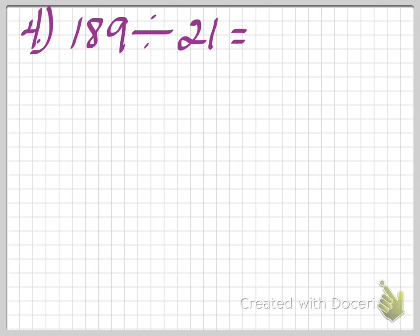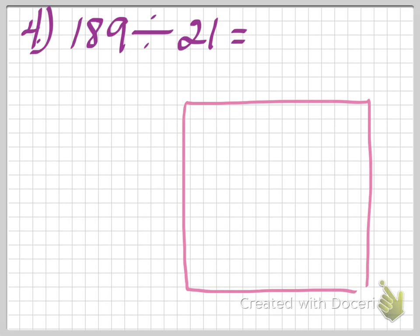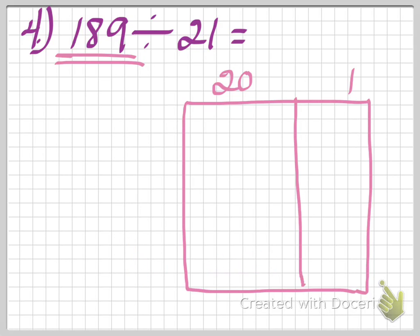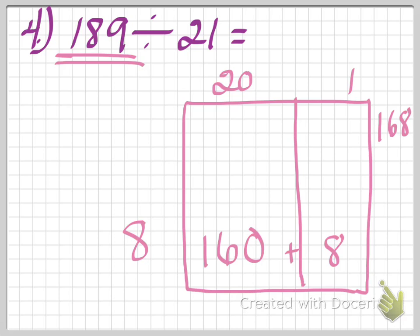Last one: 189 divided by 21. Drawing my array. 21 can be broken down into 20 plus 1. I'm going to start with 10. 10 times 20 is 200 — and right away I can see that's going to be too big, because 200 is bigger than 189. So I'm not going to start with 10 after all. Let me try 8 instead. 8 times 2 is 16, then tack on the 0 — that's 160. 8 times 1 is 8. 160 plus 8 is 168. I'm not quite to 189 yet.